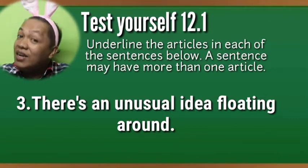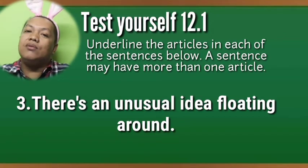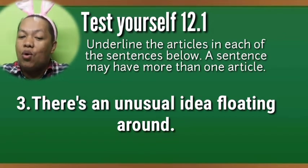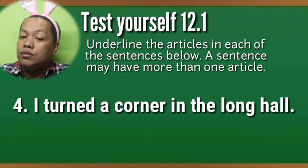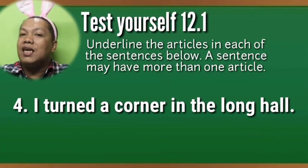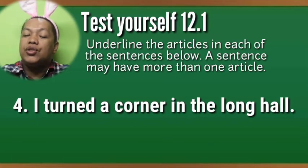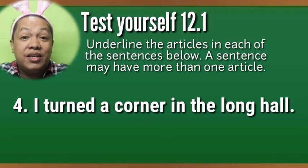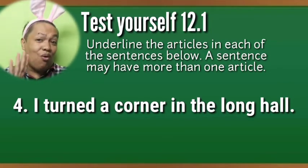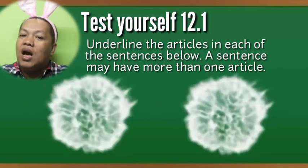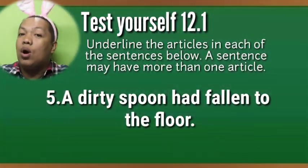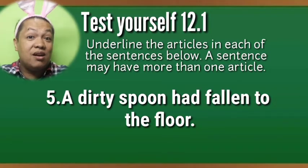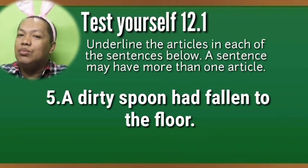Sentence three: 'There's an unusual idea floating around.' What is the article in sentence three? Sentence four: 'I turned a corner in the long hall.' What is the article in sentence four? Sentence five: 'A dirty spoon had fallen to the floor.' What is the article in sentence five?